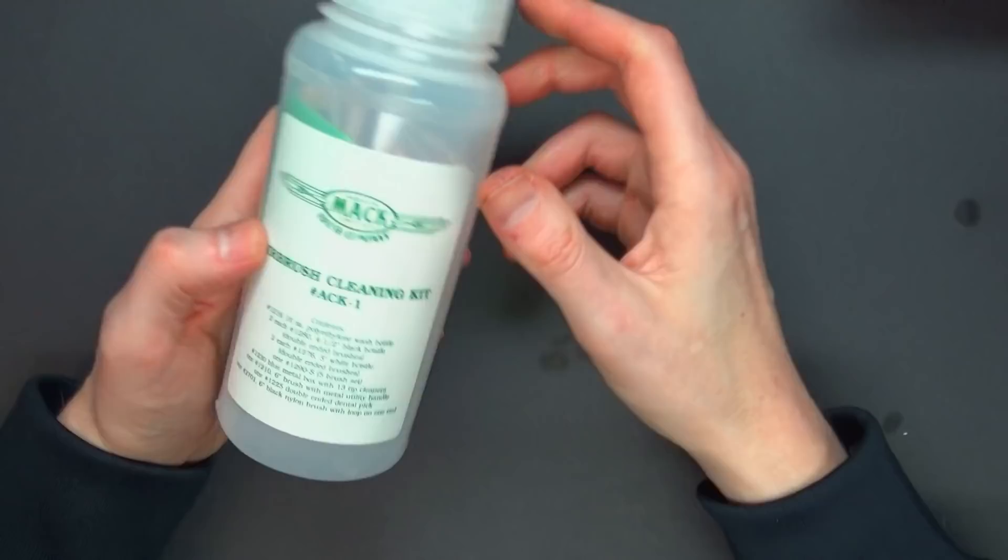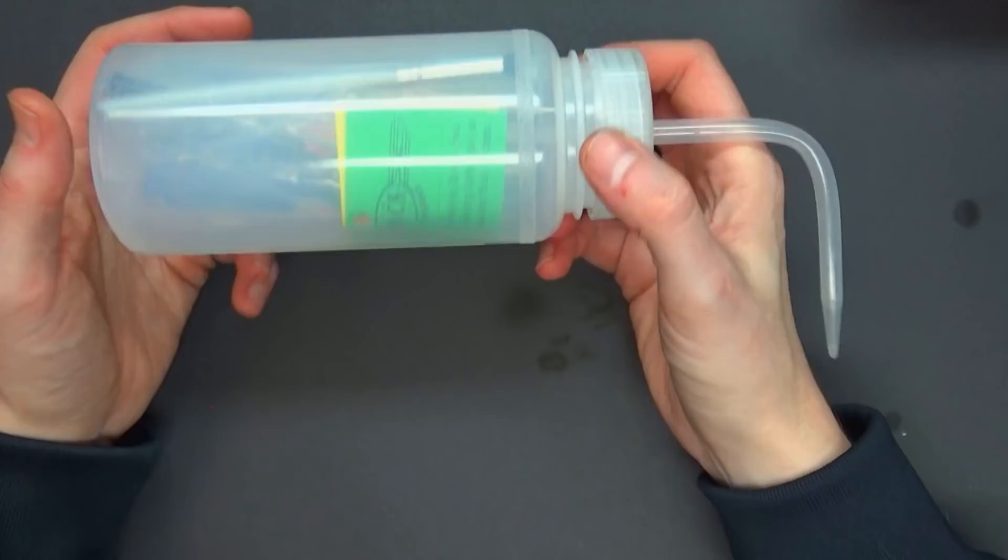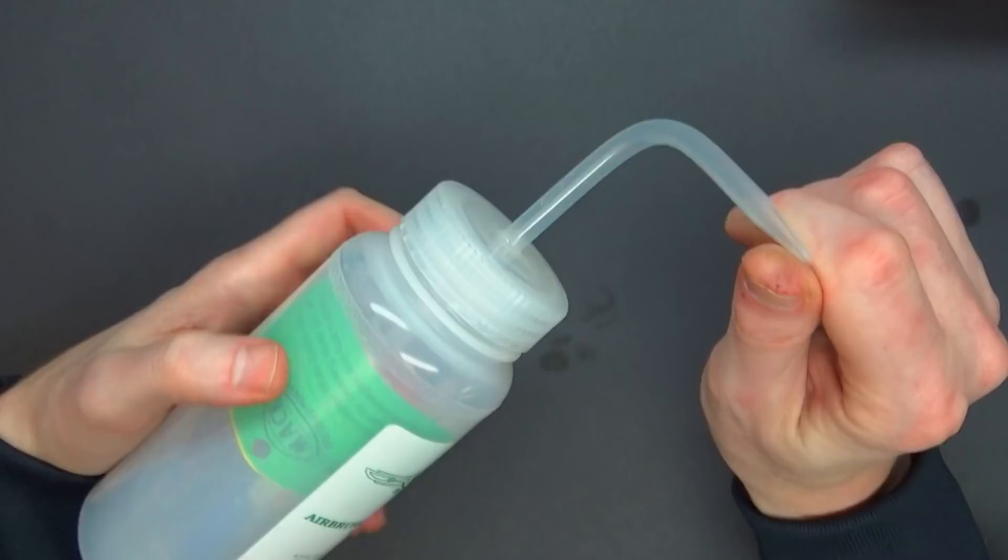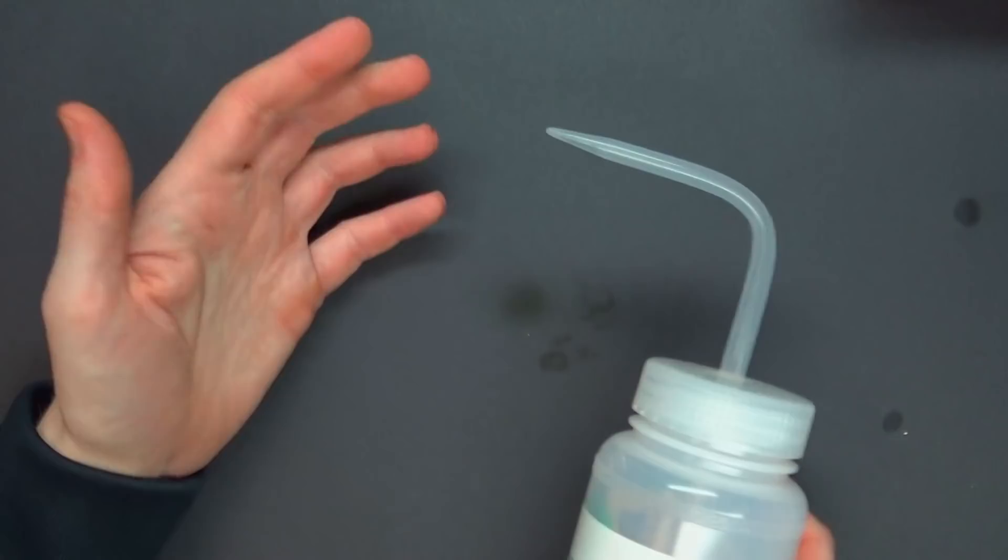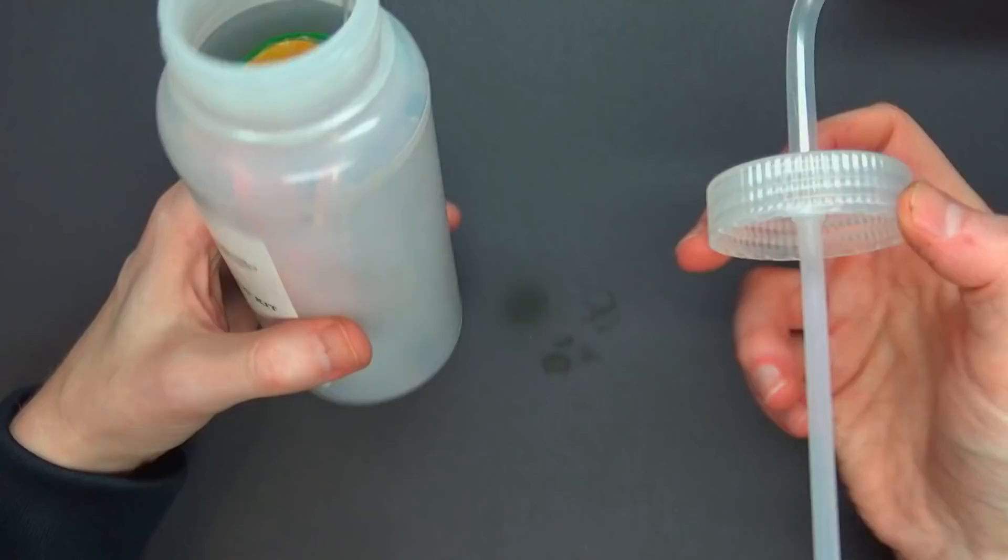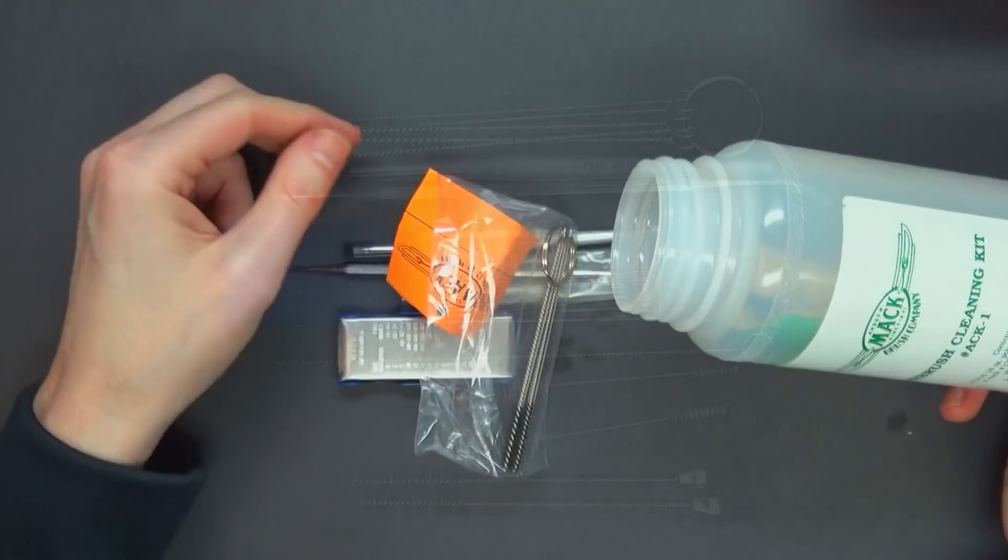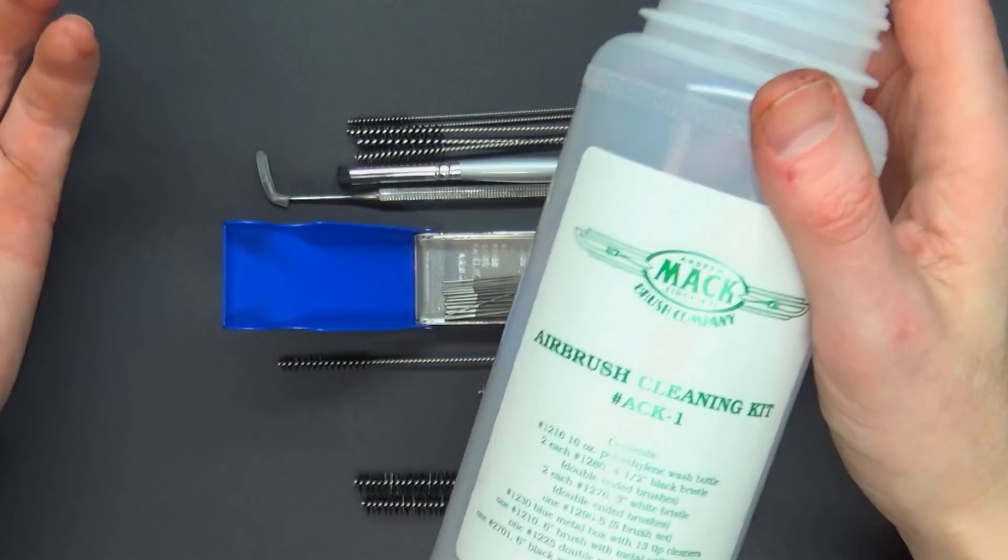A great combo kit from Spray Gunner is this airbrush cleaning kit. It's made by MAC, called ACK One. It's basically a plastic squirt bottle with a gooseneck neck for getting up into your airbrush. You're probably like, I don't understand how this works. We're going to show you because my airbrush has paint in it. We're going to clean it out and show you exactly how to clean your airbrush. It comes with a bunch of other cleaning products as well.